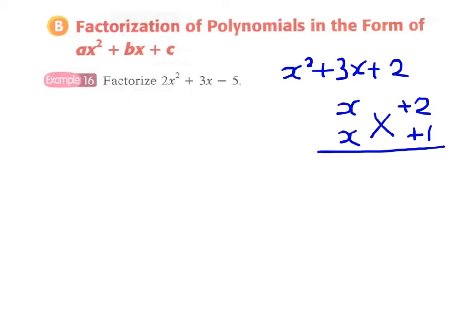middle term of +3x. Therefore we can come up with two factors: x + 2 times x + 1. But what if the coefficient of the x² term is not equal to 1, such